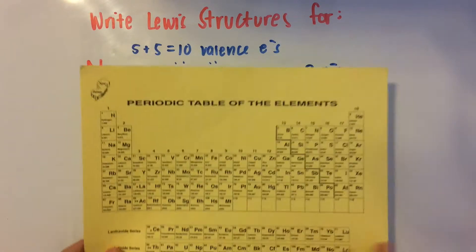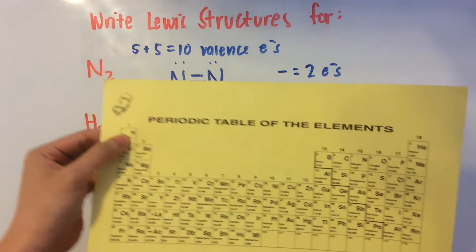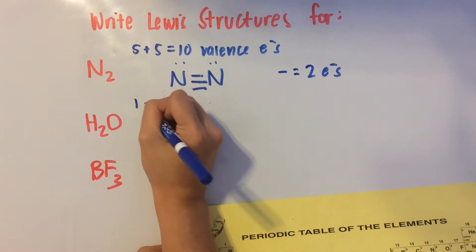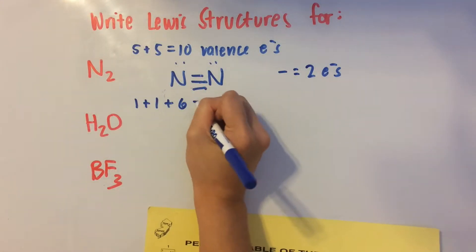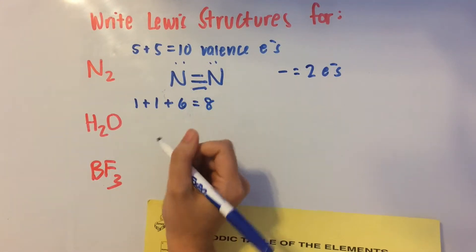Okay. Now H2O. We have one valence electron for hydrogen and we have two hydrogens. And for oxygen, it's over here. Looks like we have six. So that's going to be eight valence electrons in total.